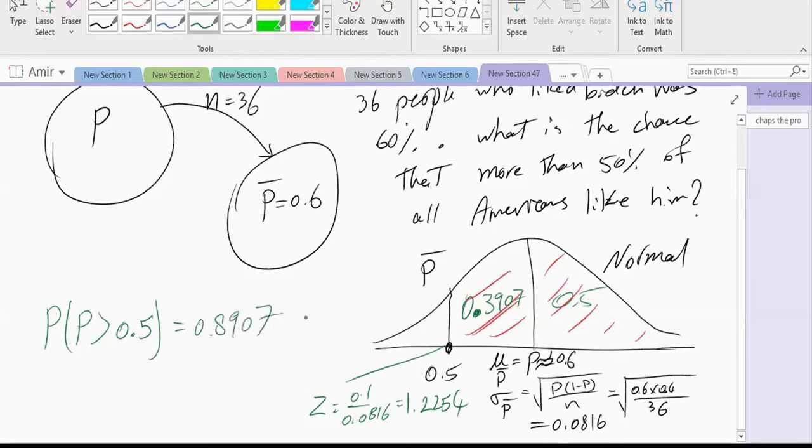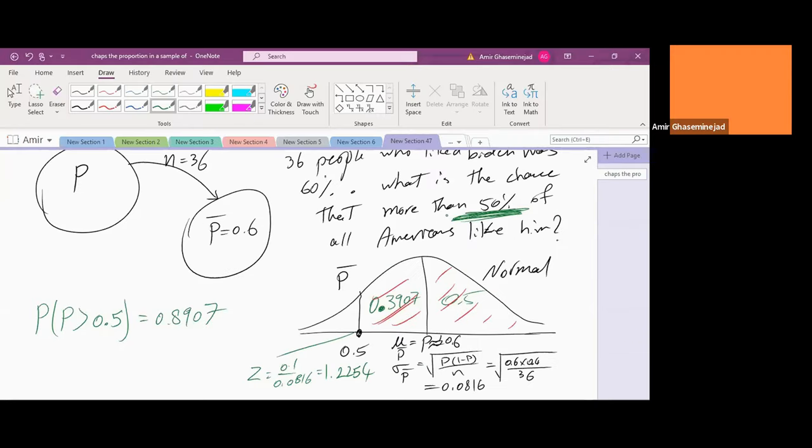So if your sample shows that Biden in your sample has 60% support, the chance he will be the winner of the election, notice that the winner of the election is the person who gets more than 50%. If your sample shows 60% of people like Biden, then the chance that he will win elections would be 89%. The only thing that we knew was the statistic of the sample, and using the statistic of the sample, we predicted the parameter of the population.